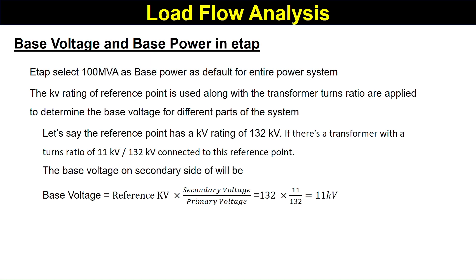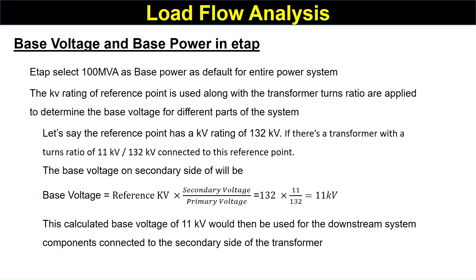This gives a base voltage of 11 kV on the secondary side. This calculated base voltage of 11 kV would then be used for all downstream system components connected to the secondary side of the transformer. That means whatever components are on the secondary side of the transformer will have a base voltage of 11 kV.